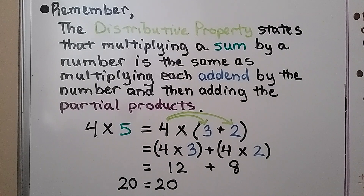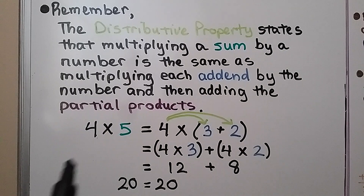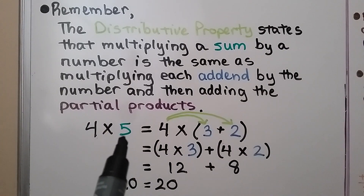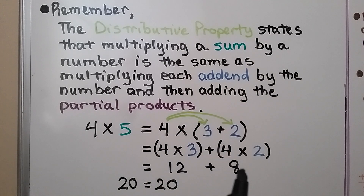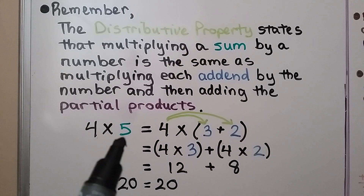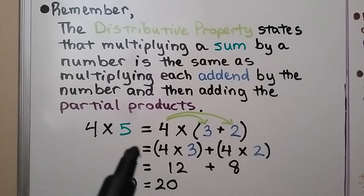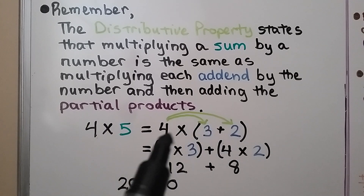Remember, the distributive property states that multiplying a sum by a number is the same as multiplying each addend by the number and then adding the partial products. For example, 4 times 5: 5 is our sum, the addends would be 3 plus 2. 4 times 5 is 20. We could do 4 times 3, which is 12, and 4 times 2, which is 8, and that equals 20. Multiplying the sum 5 by 4 is the same as multiplying (3 plus 2) times 4.